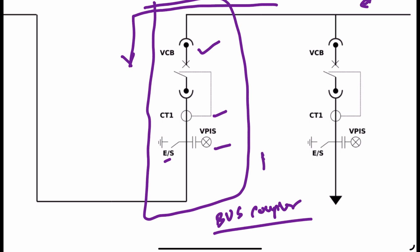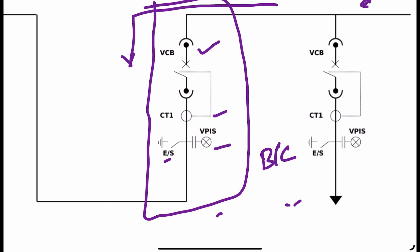The bus coupler panel couples the two different bus bars by connecting them in series. All required equipment is connected here as well. However, notice that after connecting via the bus coupler panel, the height of the bus bar has changed.